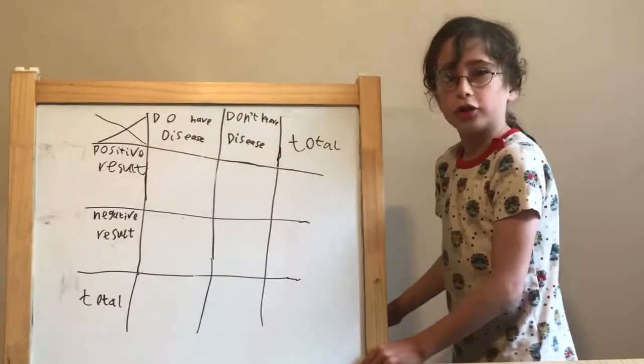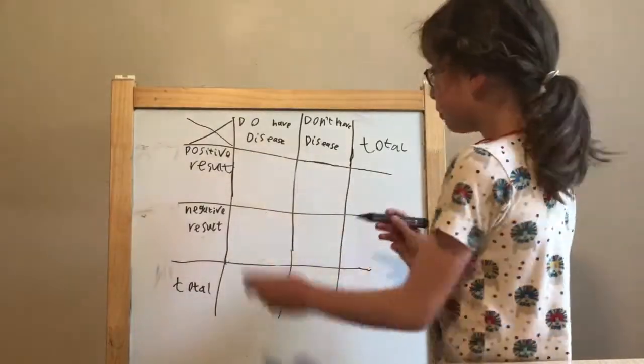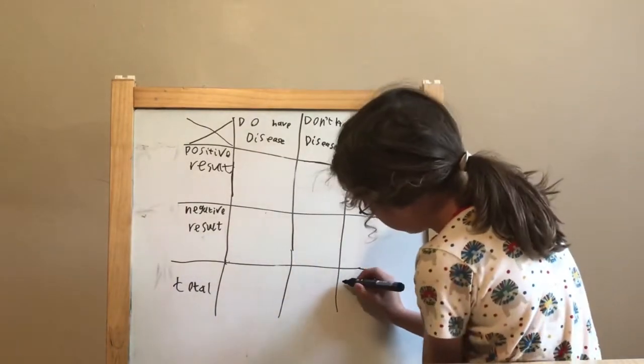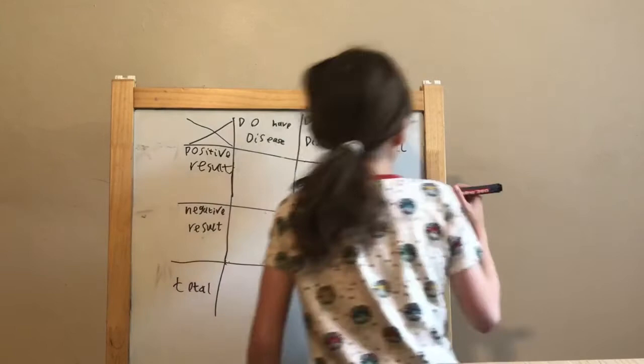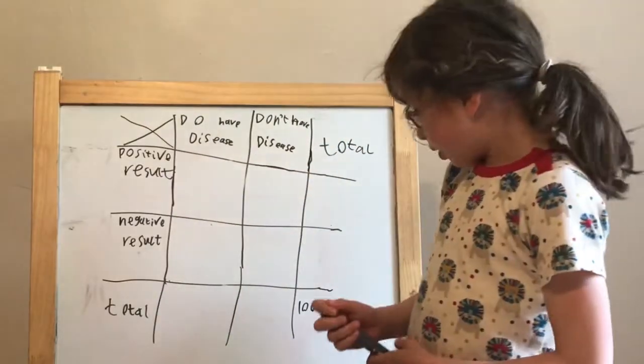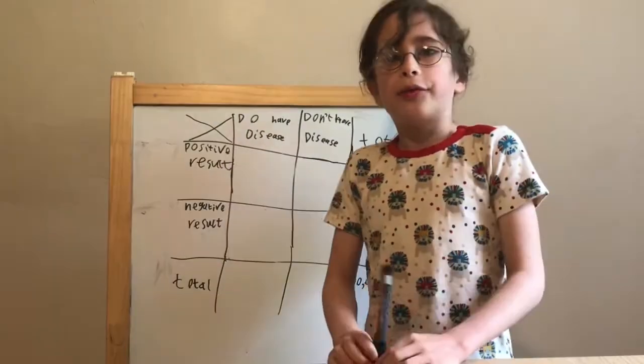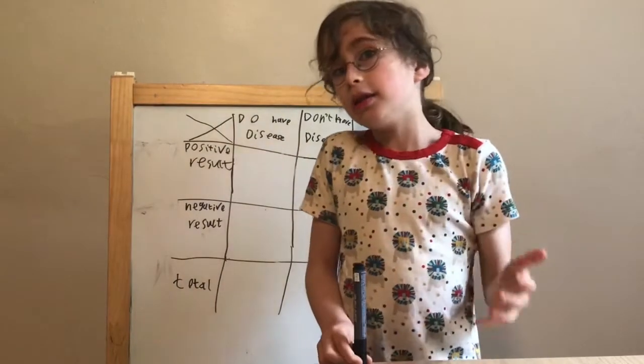We're going to show you guys on our trusty whiteboard. So down here we're going to put 1 million. That's the amount of people we're testing. We're testing a million people, so it only infects one in 10,000, right?